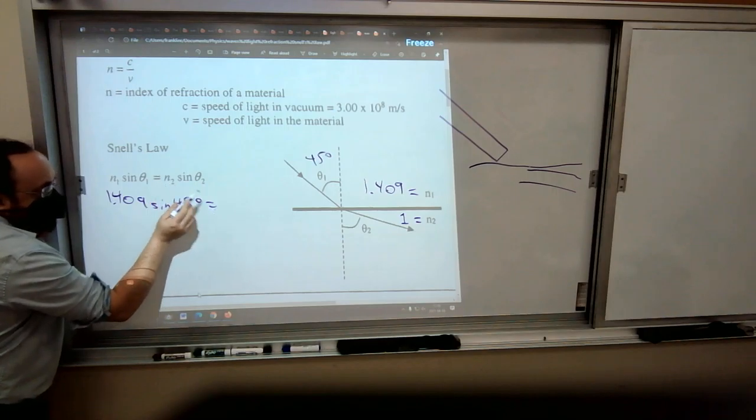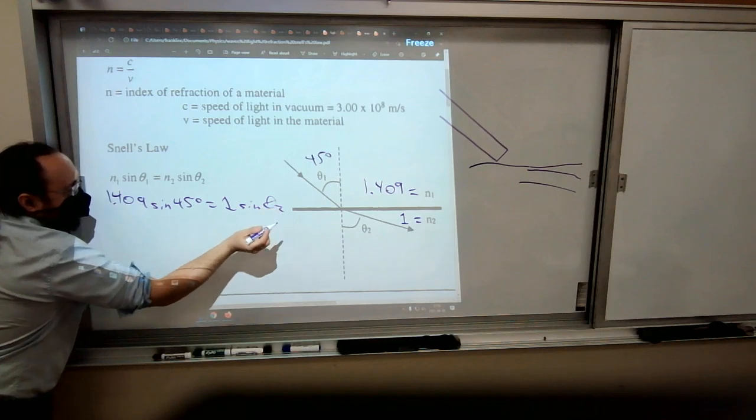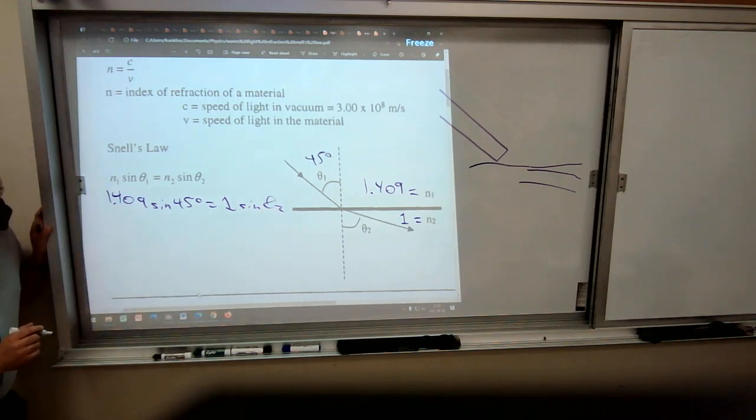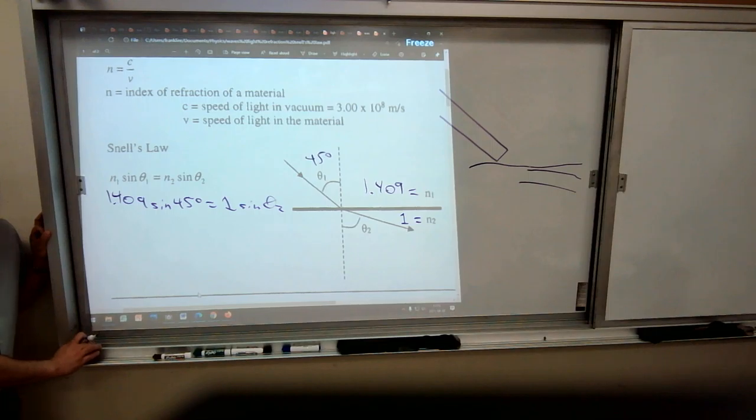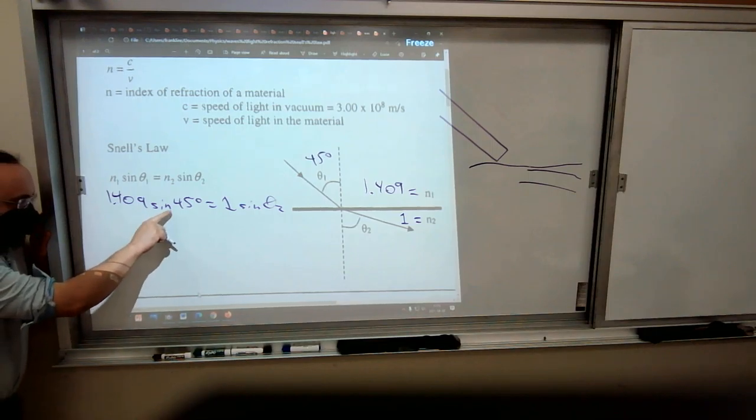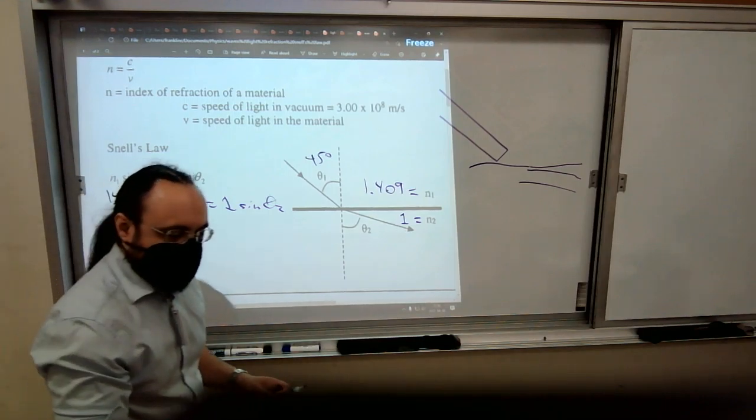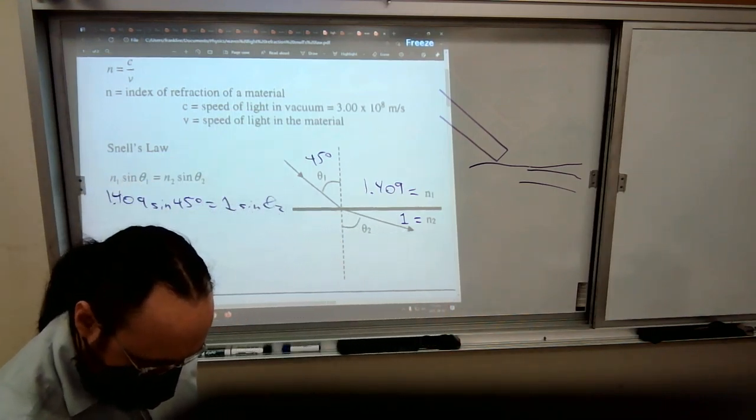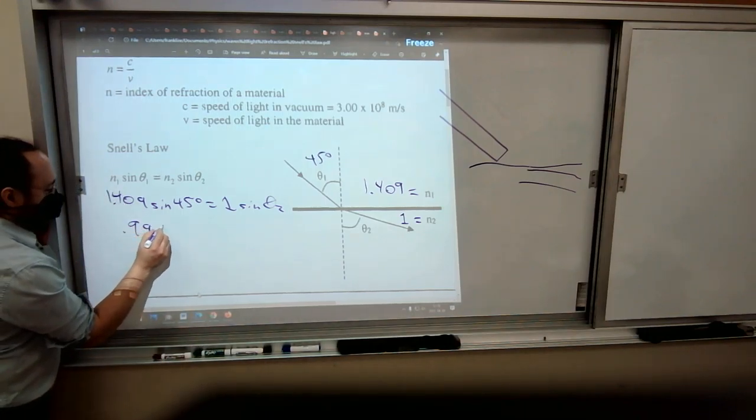Equals n2—we're saying is 1 for air—times the sine of theta 2, and we're going to figure out that second angle with math. Now, the first question, you can just divide by—you can just do regular algebra. You don't have to mess with fancy trigonometric stuff, although your calculator will need to be in degrees if you're going to do the sine of 45 degrees. Anyway, let's see what my math says here. I got 0.9963.